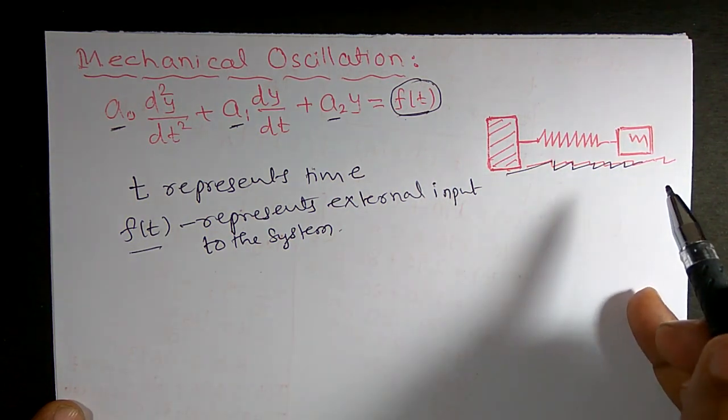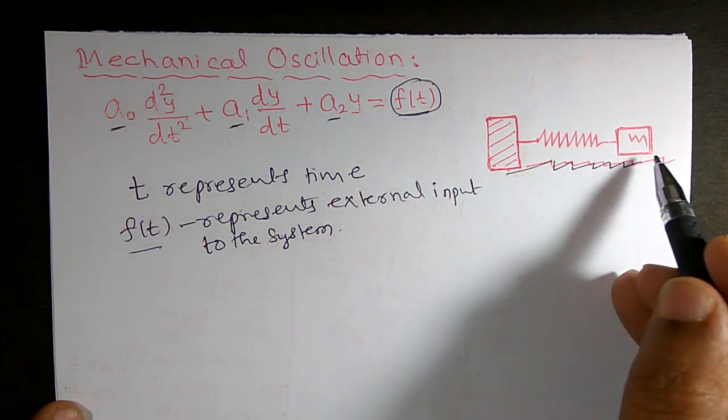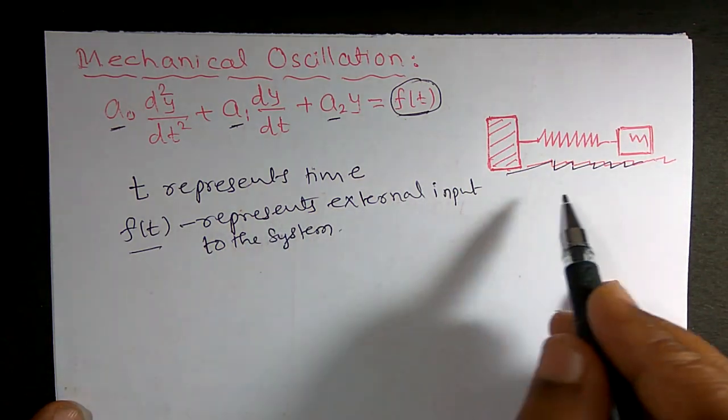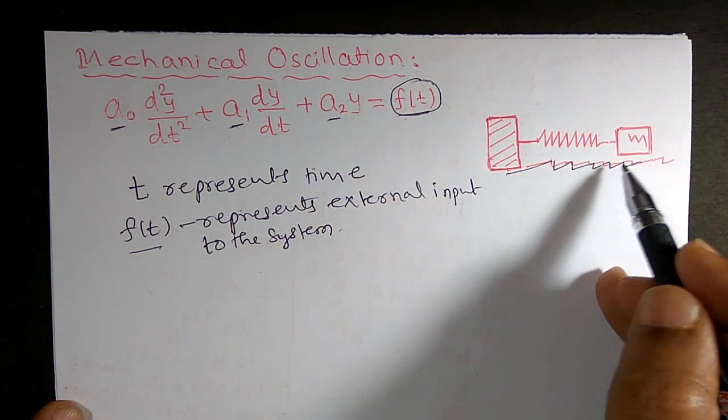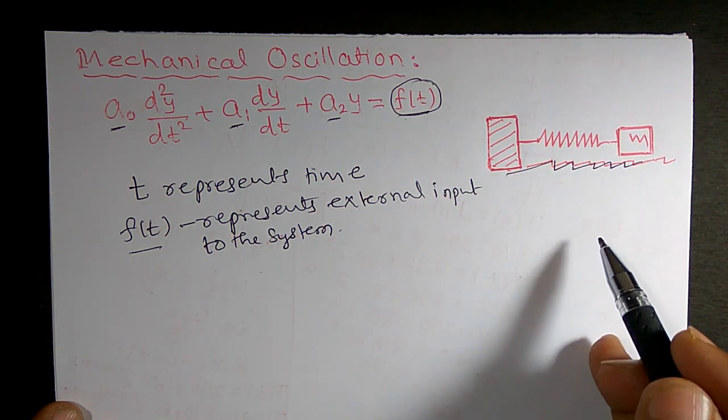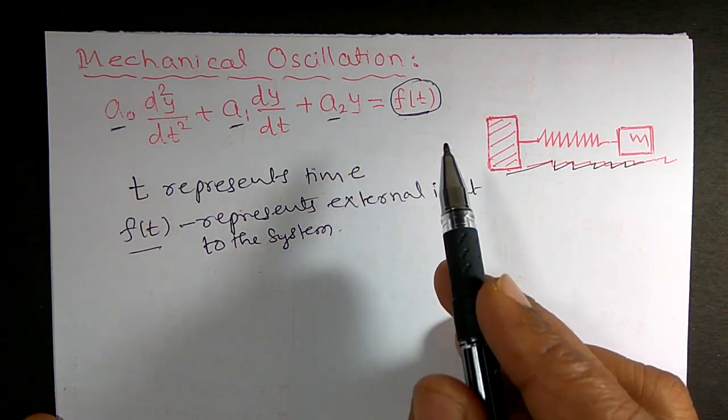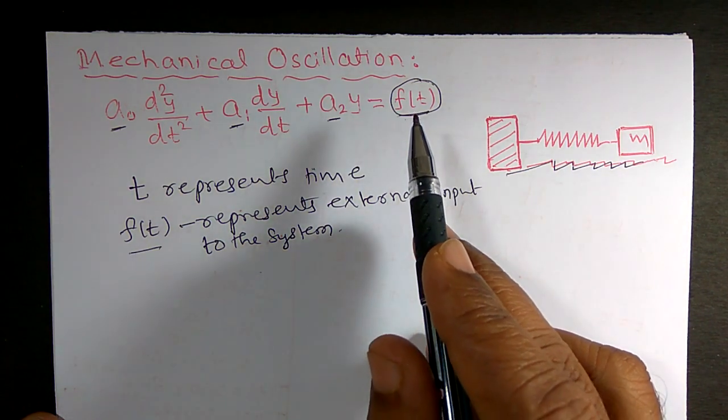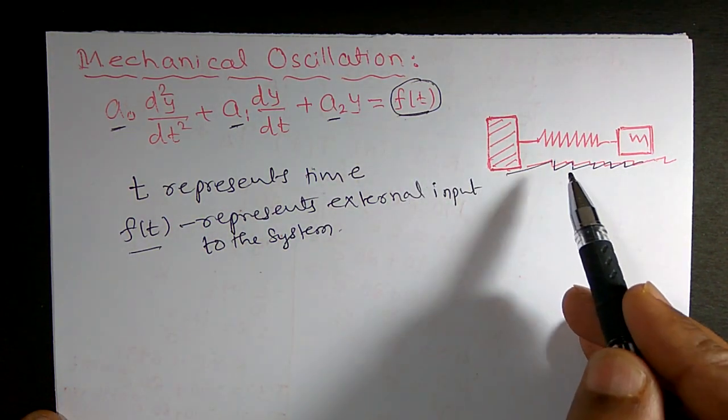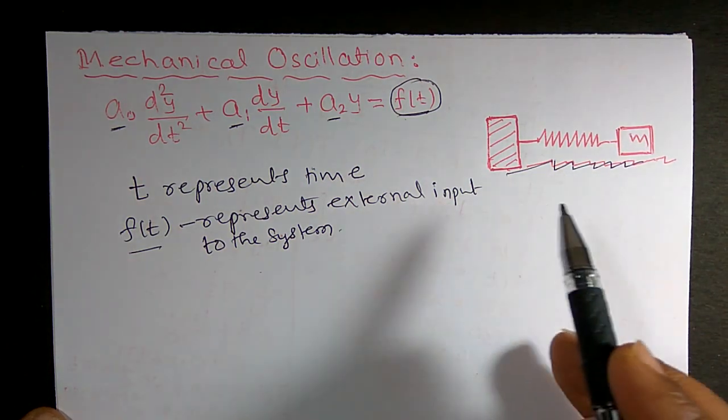So as time increases, the speed of the spring goes on decreases because of the rough surface. Unless if there is an external force or external energy, spring will stop after some time.